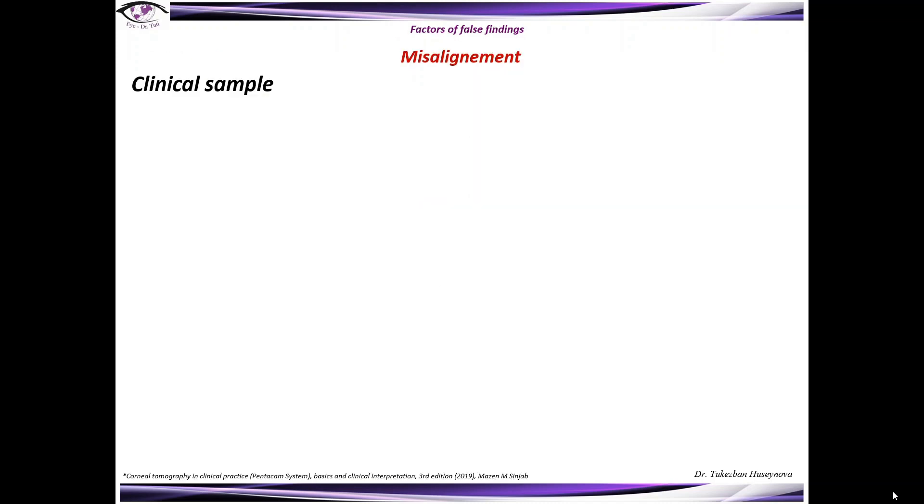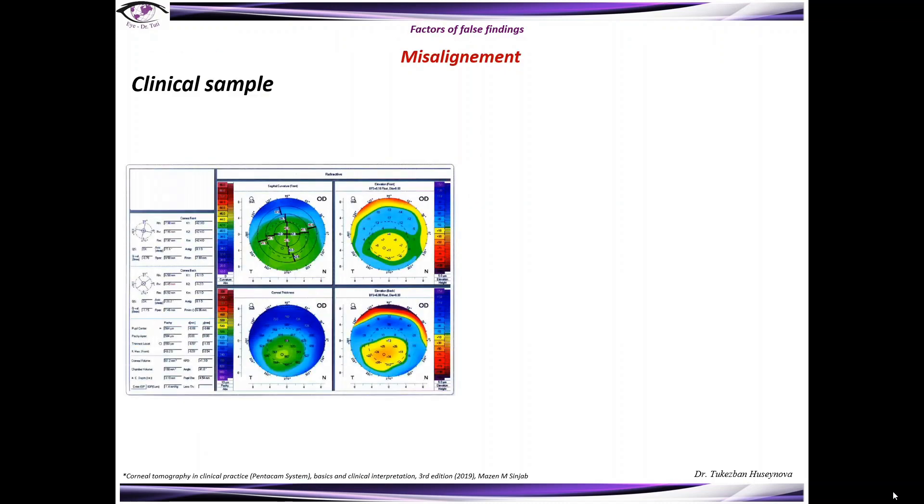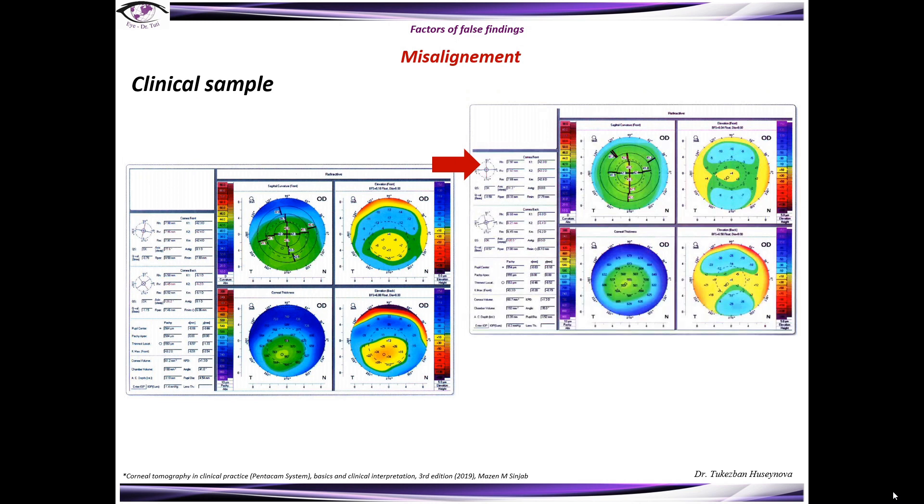Let's continue with clinical samples. This image shows the misalignment of an eye fixating downward during capturing the cornea. And in this image, the same eye after realignment. This is a clear sample of patient's misalignment.